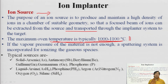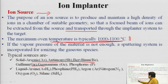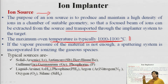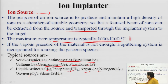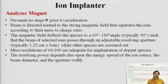The typical sources used in ion implantation include solid sources such as arsenic, antimony, beryllium, gallium, germanium, and phosphorus. Liquid sources include arsene gas and phosphine. Gas sources include argon, nitrogen, oxygen, and silane. Silane is basically the workhorse in IC fabrication — the majority of applications make effective use of silane for carrying out different processes.